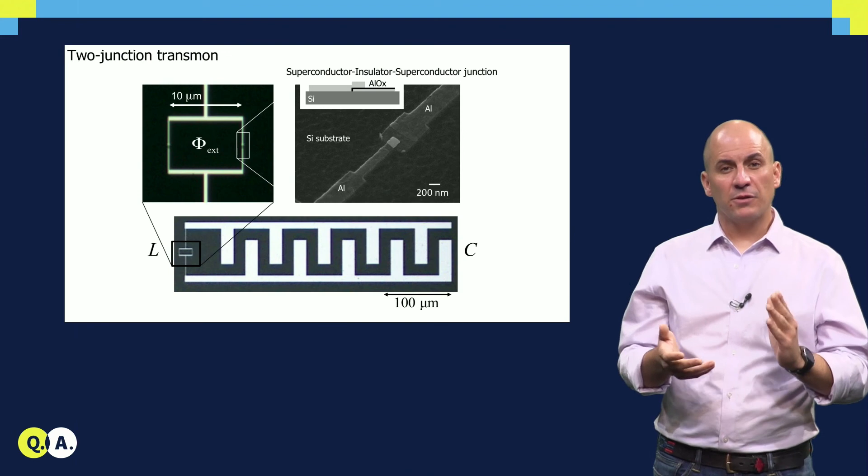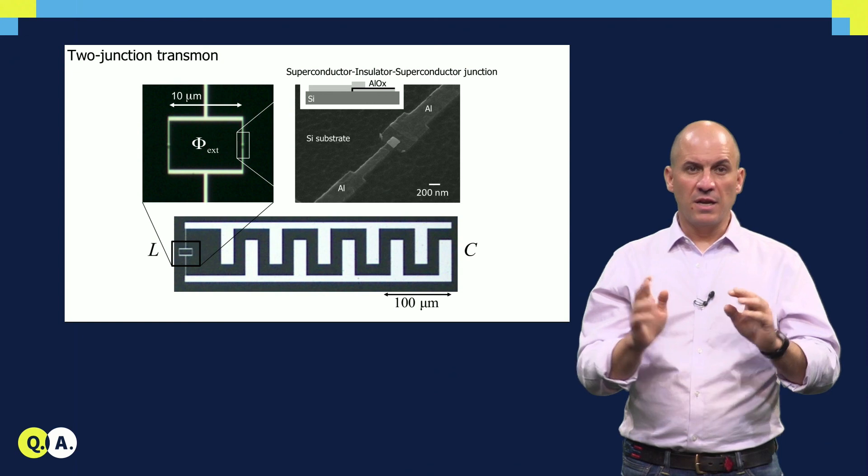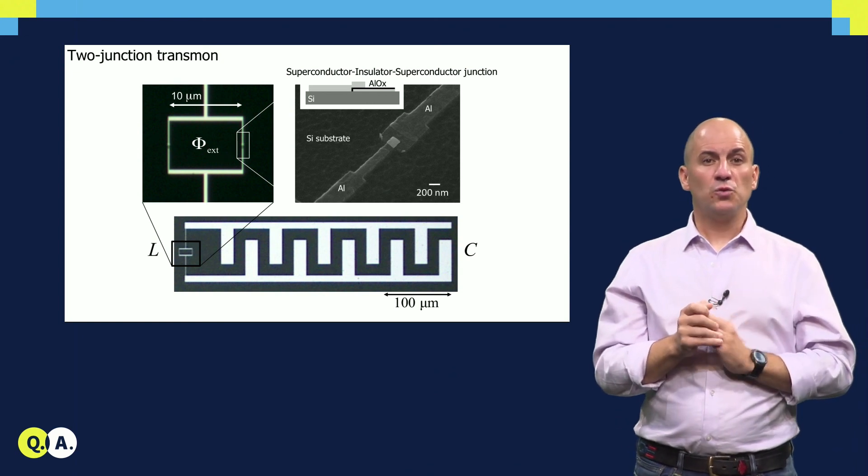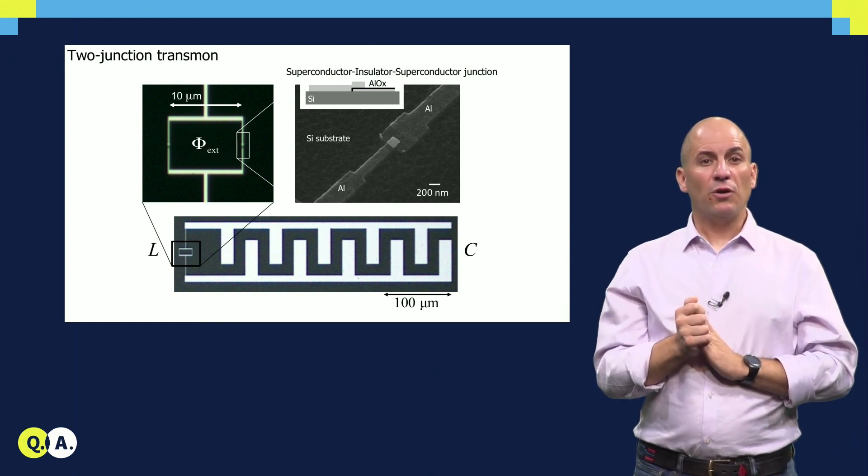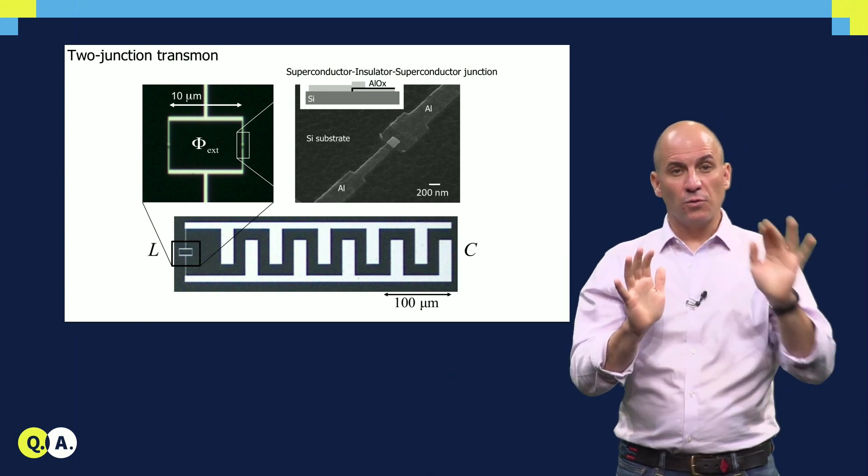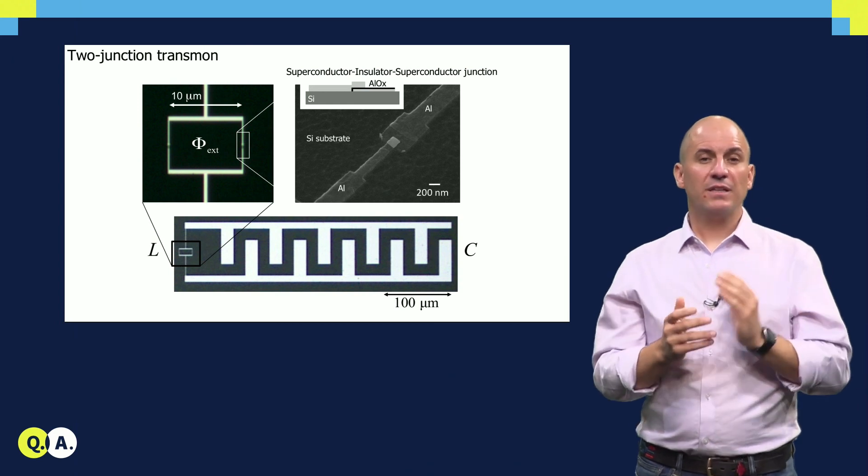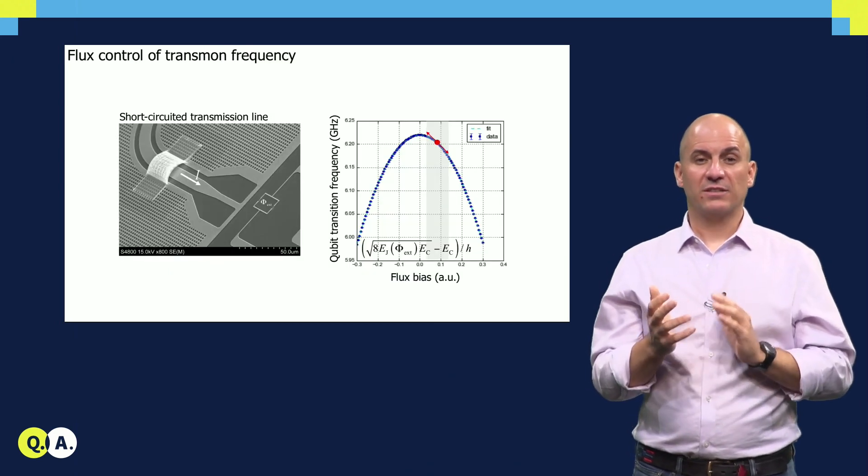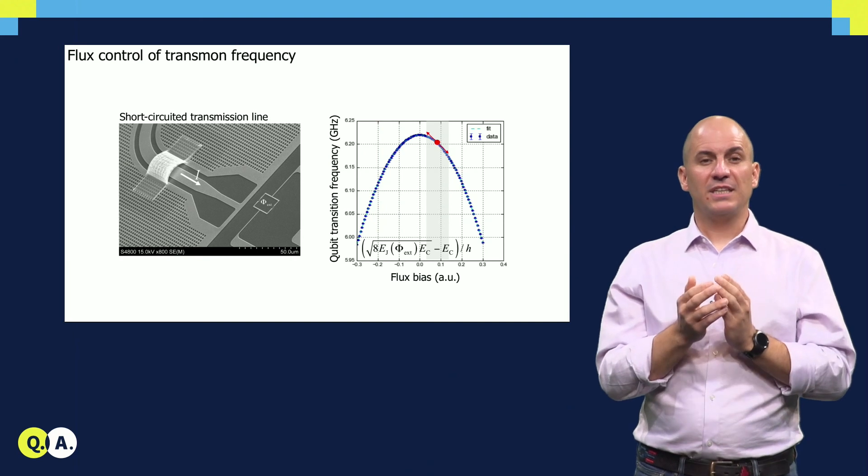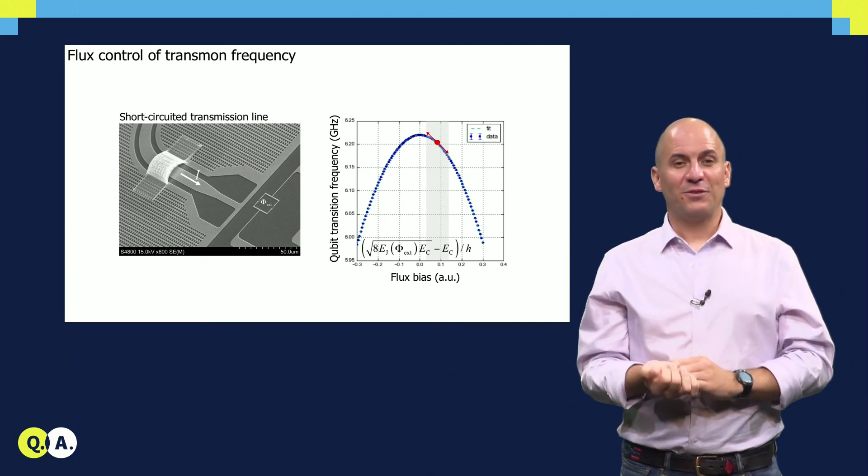As a final note, we build our transmon not from one, but two Josephson junctions in parallel. This gives us the possibility to tune the inductive element, and thereby also the qubit transition frequency, by threading a magnetic flux through the loop defined by the two junctions. We can do this independently for each qubit, and on nanosecond timescales. This capability is the workhorse enabling two qubit gates. Adrian will present this in a later video.